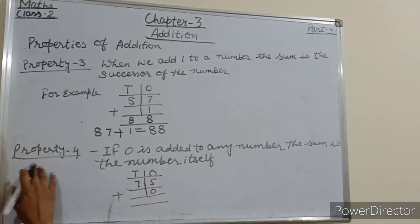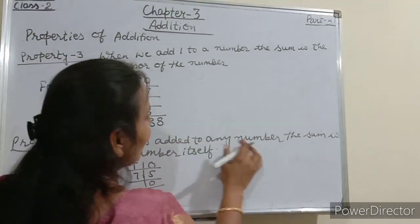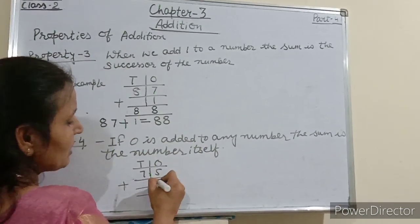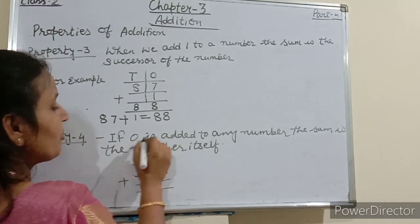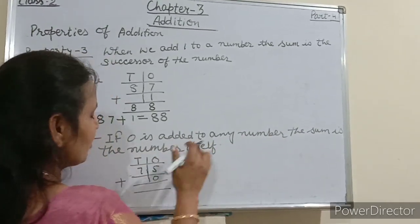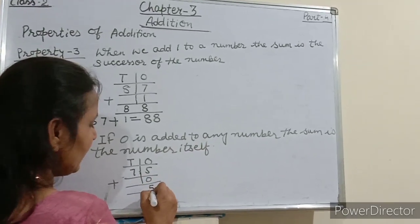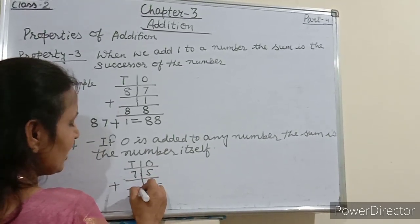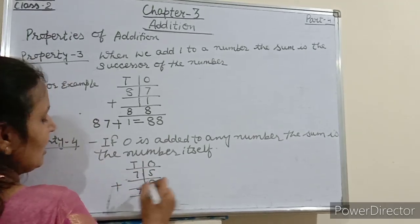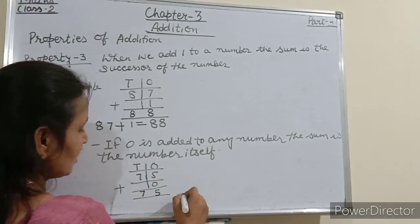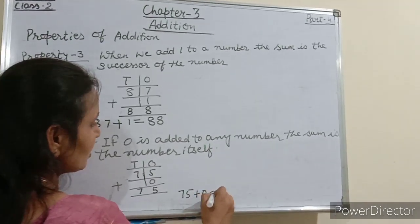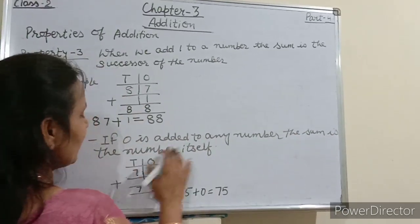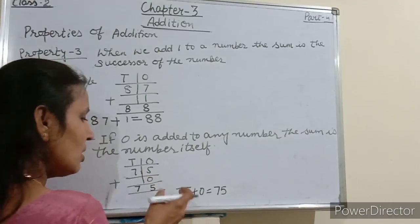Now property number 4. If 0 is added to any number, the sum is the number itself. So 5 plus 0 equals 5. 5 plus 0 is 5, and here 7 — we write 7 because there is no number to add. So 75 plus 0 equals 75, because if 0 is added to any number, the sum is the number itself.